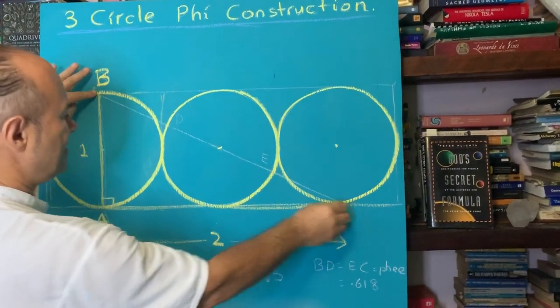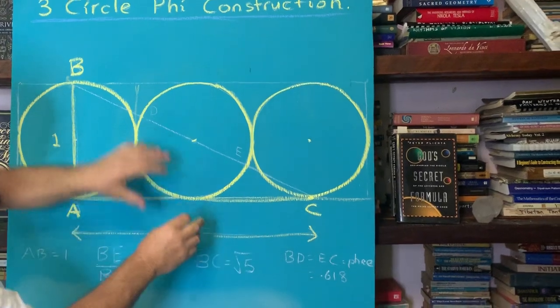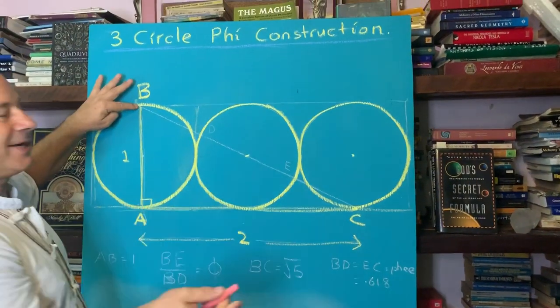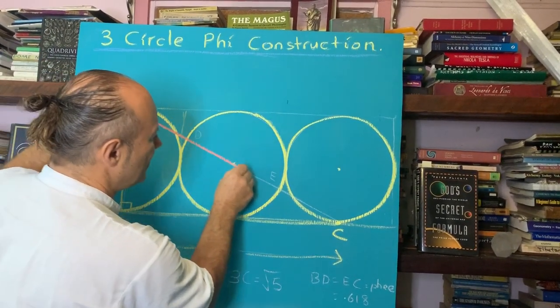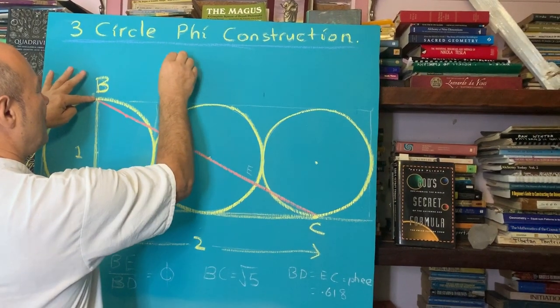We know from Pythagoras' theorem, that one square, the square on this side plus the square on that side, will give us the hypotenuse. And without doing the calculation now, we know that this distance is called root 5, square root of 5.